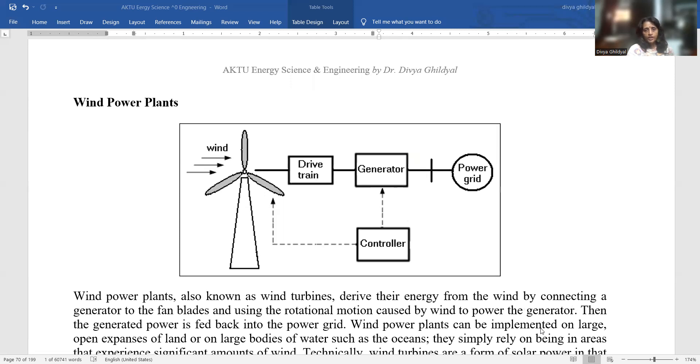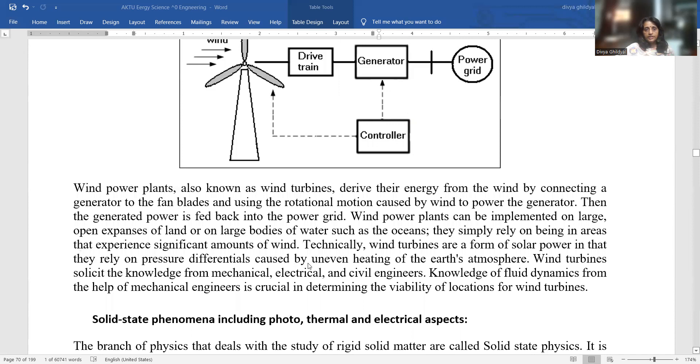Wind power plants, also known as wind turbines, derive their energy from wind by connecting a generator to the fan blades and using the rotational motion caused by wind to power the generator. The generated power is fed back into the power grid. Wind power plants can be implemented on large open expanses of grass or land or water such as oceans. They simply rely on being in areas that experience significant amounts of wind. Technically, wind turbines are a form of solar power in that they rely on pressure differentials caused by uneven heating of Earth's atmosphere.